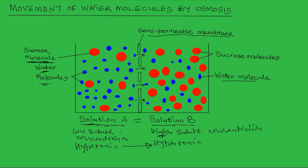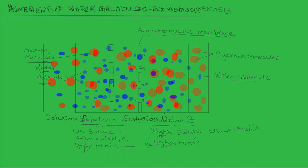Remember, the solute molecules, like sucrose, are too big to move across the semi-permeable membrane. So it is the water molecules that are small enough to pass across, and therefore they are the ones that bring about equilibrium in terms of water concentration.